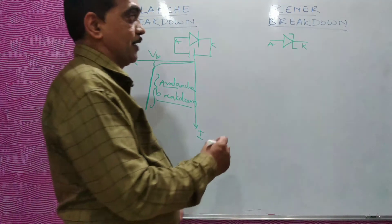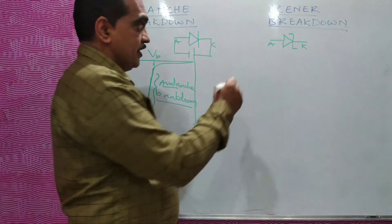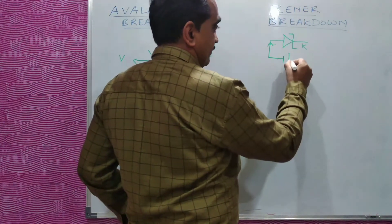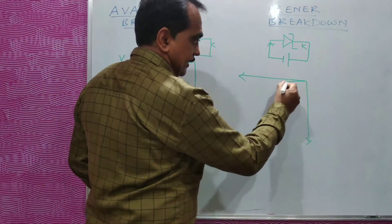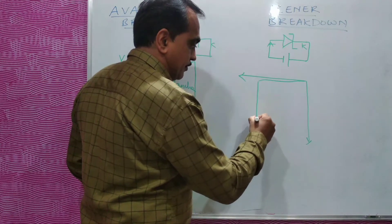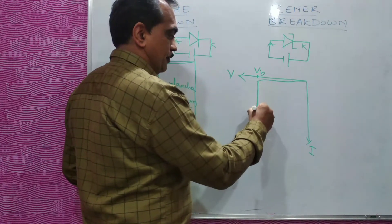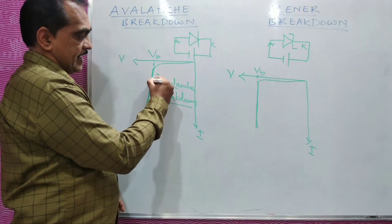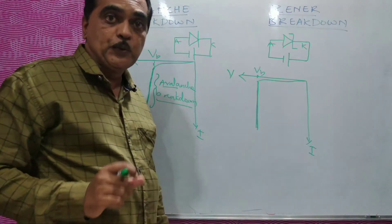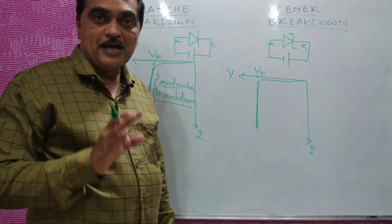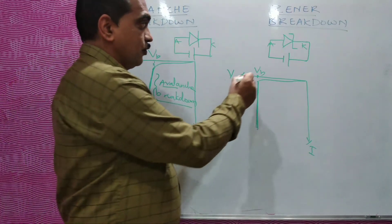In zener breakdown, because the diode is heavily doped as compared to the normal PN junction diode, if it is reverse biased, you will get a reverse biased graph of the same type, but the breakdown will be very sharp. This is voltage, this is reverse current, this is breakdown voltage. The breakdown will be very sharp — at a particular reference voltage, the current goes on increasing, and that is called your zener voltage.